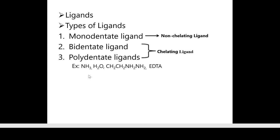Some examples: in NH3, only one nitrogen atom is able to donate a lone pair of electrons to the central metal atom, so it is a monodentate ligand. In H2O, only oxygen is able to donate lone pairs — also a monodentate ligand. Both are non-chelating ligands. In ethylene diamine (CH2NH2-CH2NH2), two nitrogen atoms are available to donate lone pairs, so it is a bidentate and chelating ligand. EDTA — ethylene diamine tetra-acetic acid — is a polydentate and chelating ligand.